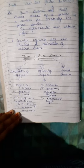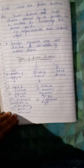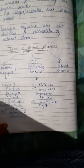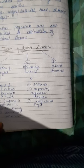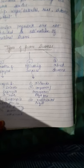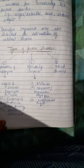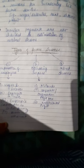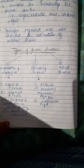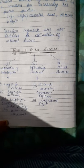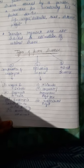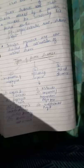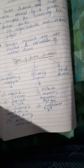The second type is Operating Surplus, which includes dividend, corporate profit tax, and undistributed profit. Undistributed profit is that part of profit which is retained by the firm for future use — also called corporate saving. Distributed profit goes to shareholders as dividend, while the portion paid to the government is corporate profit tax.